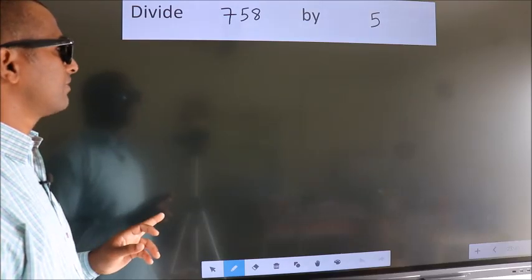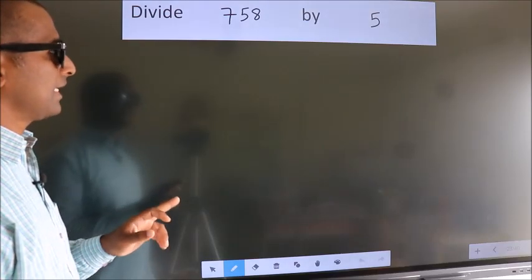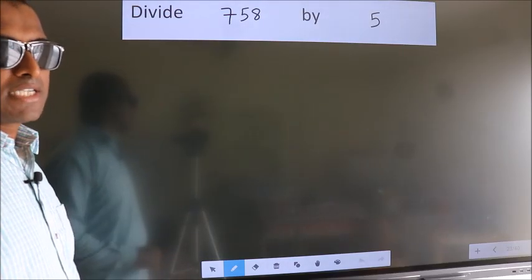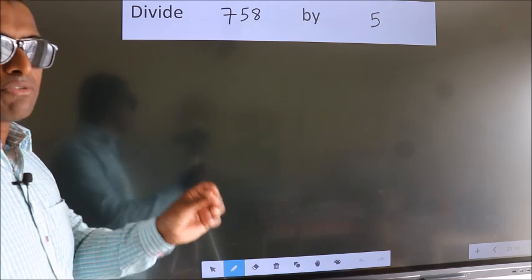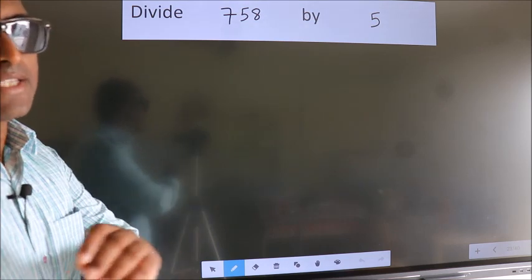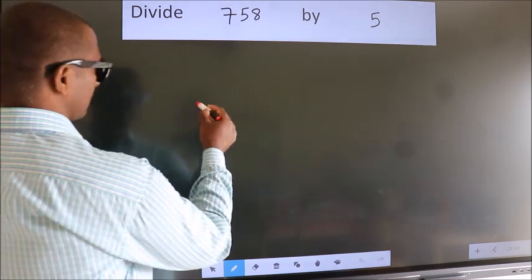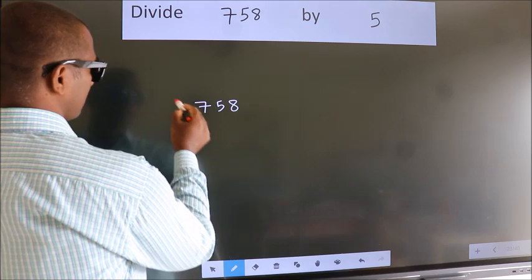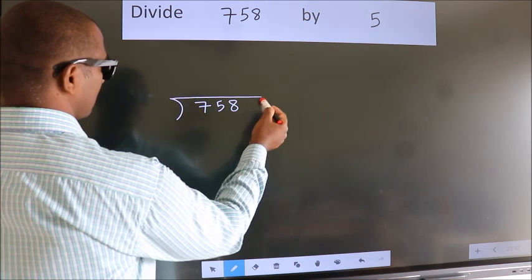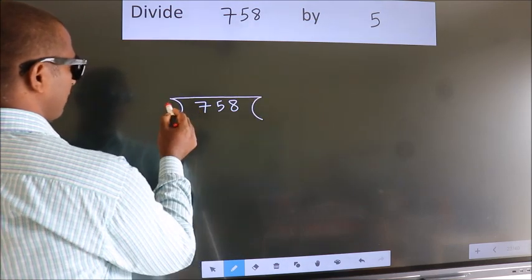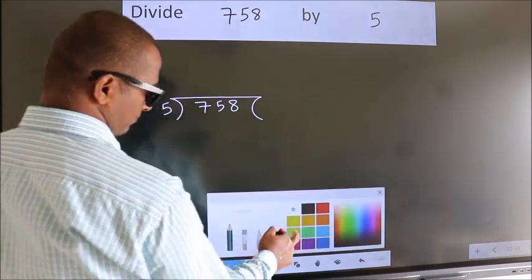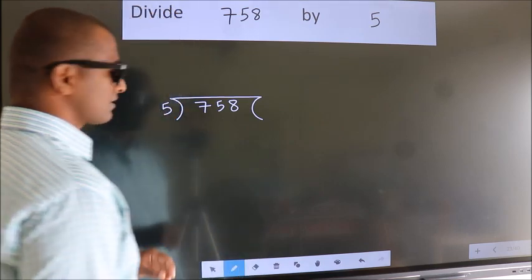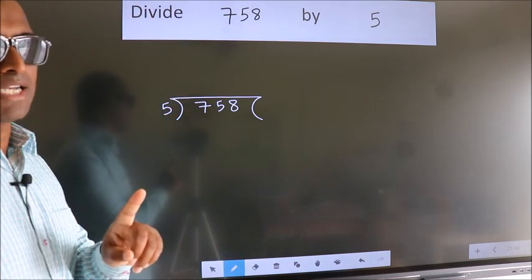Divide 758 by 5. To do this division, we should frame it in this way: 758 here, 5 here. This is your step 1.